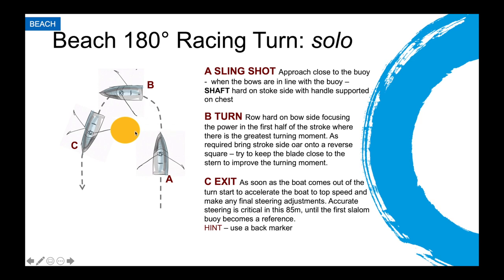After the shafting, as the boat speed has dropped, we no longer have the advantage of the slingshot and we're very much turning the boat using the outside oar as you come around, especially in the first half of the stroke where you've got the greatest turning momentum. As they come around on the inside, controlling the brake of that shaft gives them the ideal turn, and as they exit, they bring the boat back up to speed and make any last minute final steering adjustments.